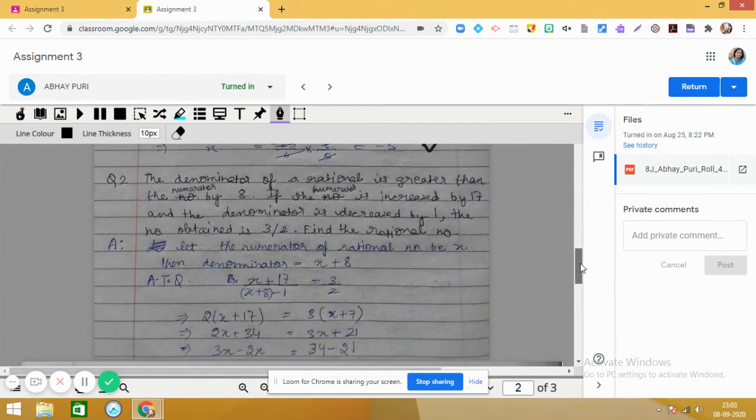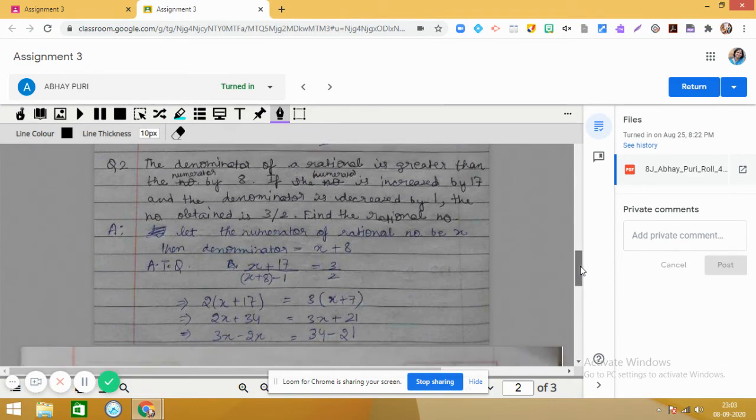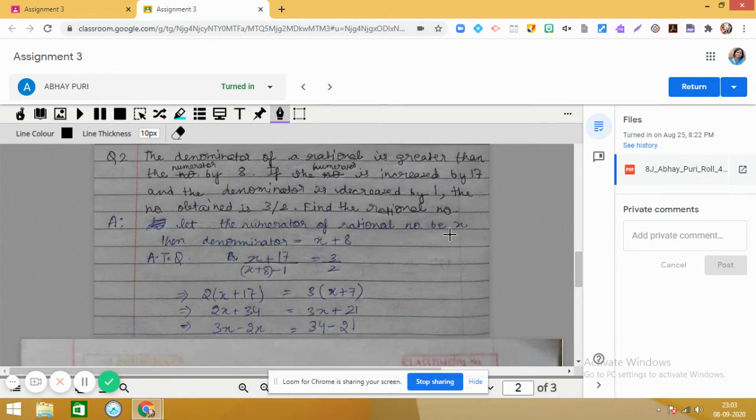Let us discuss this word problem. The denominator of a rational number is greater than the numerator by 8. If the numerator is increased by 17 and denominator is decreased by 1, the number obtained is 3/2. We have discussed such questions in our class also.